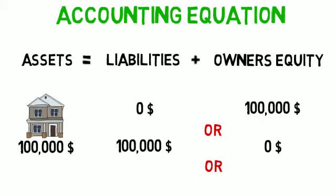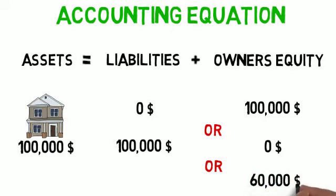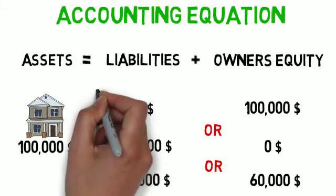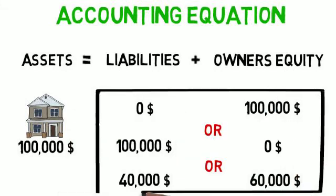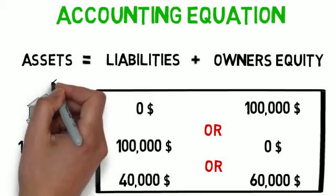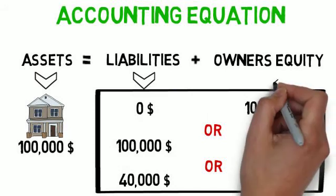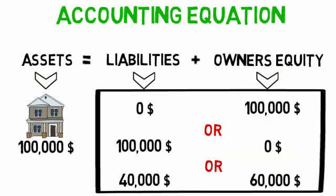If, on the other hand, you have a part of the full amount — let's say $60,000 — you will still need to borrow the rest of the amount, which is $40,000, to be able to buy the house. You can see that in all cases, the assets will always be equal to the liabilities plus owners equity. And that's the basic equation of accounting.